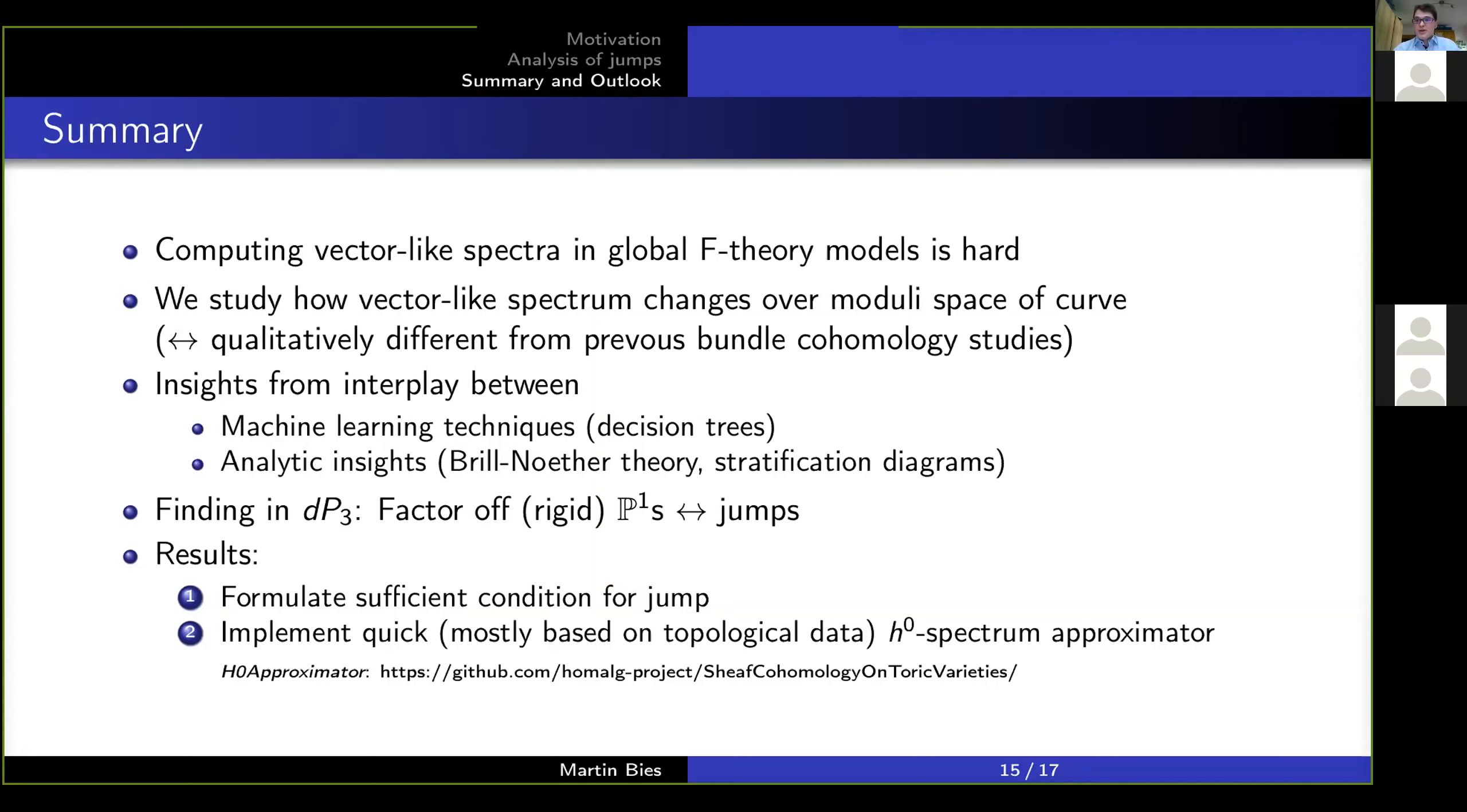In particular, we found that if you factor off P^1s from the curve, then there is a strong correlation with this and having jumps. And this we can use in twofold ways. Namely, one is to lead us on to formulate sufficient conditions for a jump to happen. And secondly, we can have this estimate for the entire spectrum. Which, of course, is interesting because, again, if you apply this to your Higgs curve and you want to know if your Higgs curve admits 0, 1, 2 vector-like pairs, then this is going to give you a rough estimate for that. And it does so very quickly because it mostly relies on topological data.